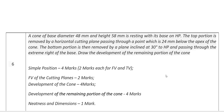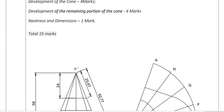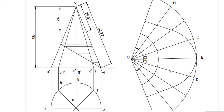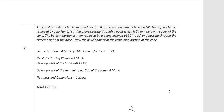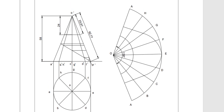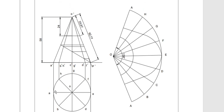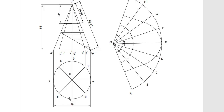Neatness and dimensions 1 mark. Since this is a cone of diameter 48 mm and height 58 mm, first you draw a circle of diameter 48 mm and divide that into 8 equal divisions. Name those points as A, B, C, D, E, F, G, H. Do the dimensioning as 48 mm.